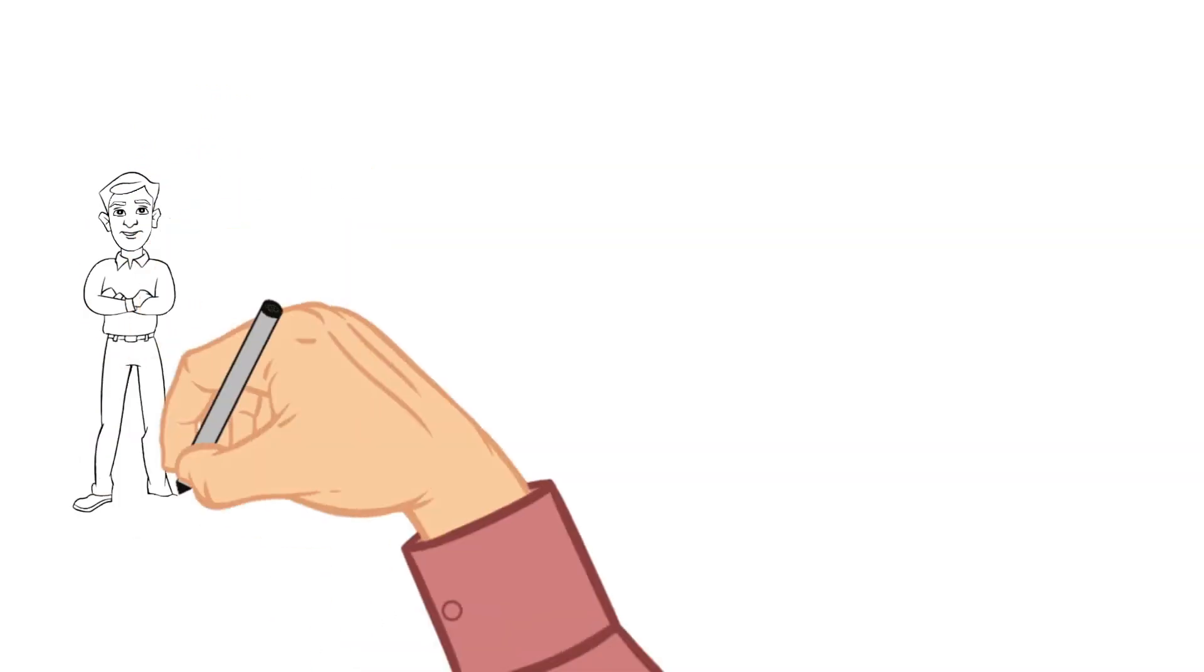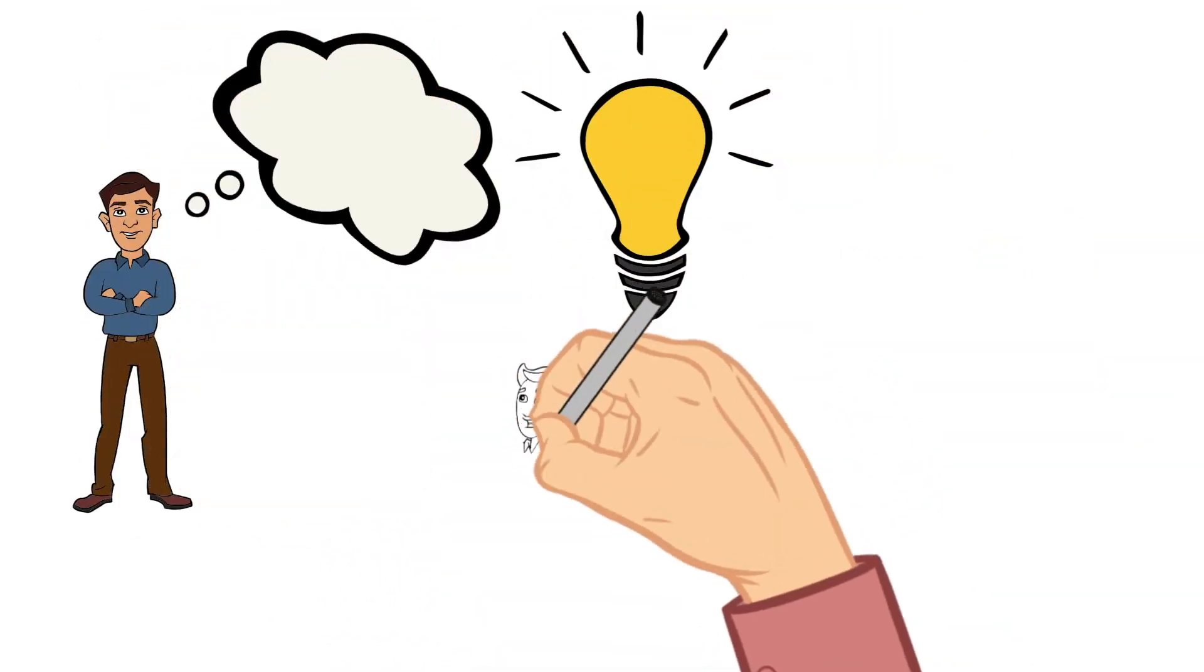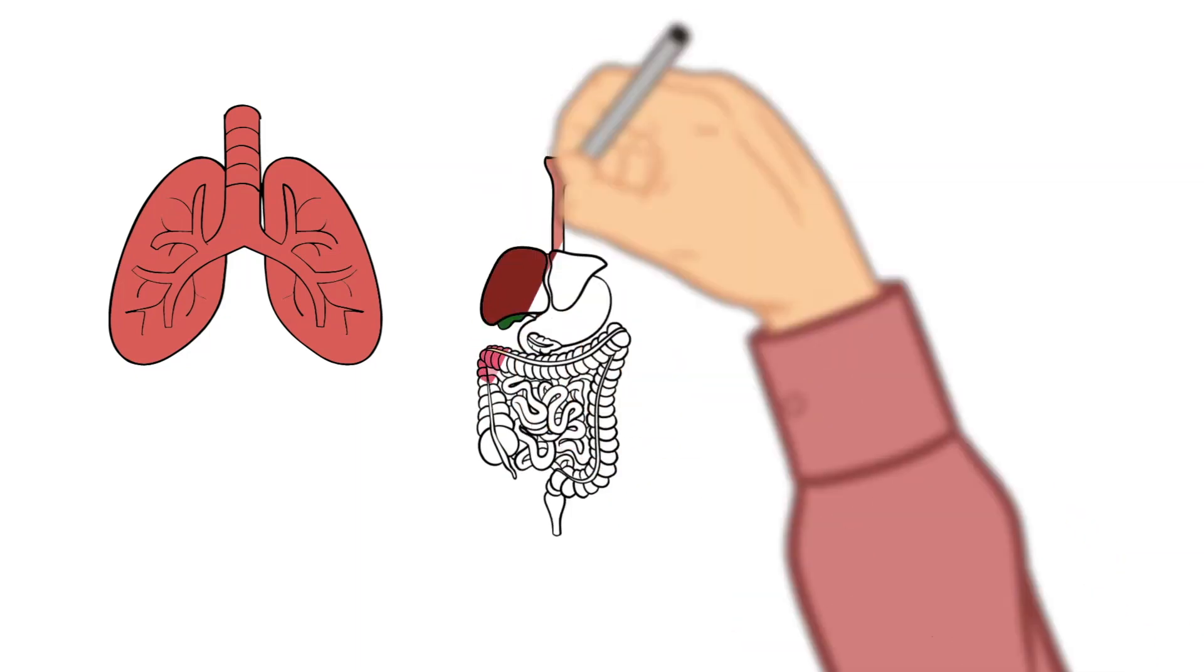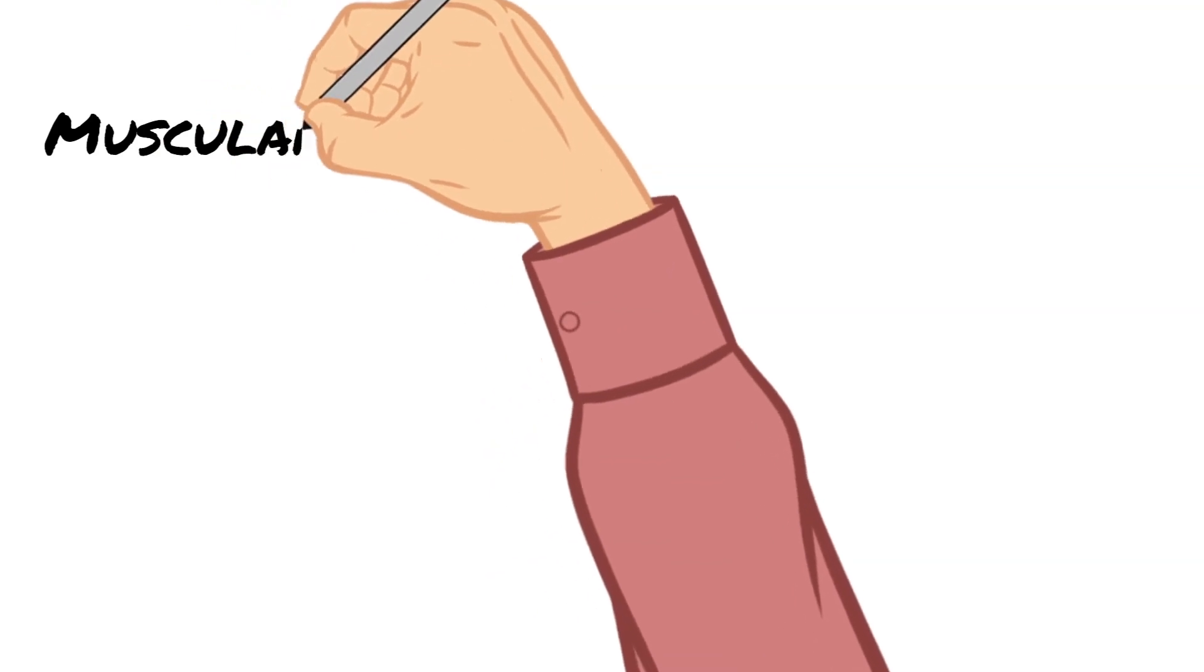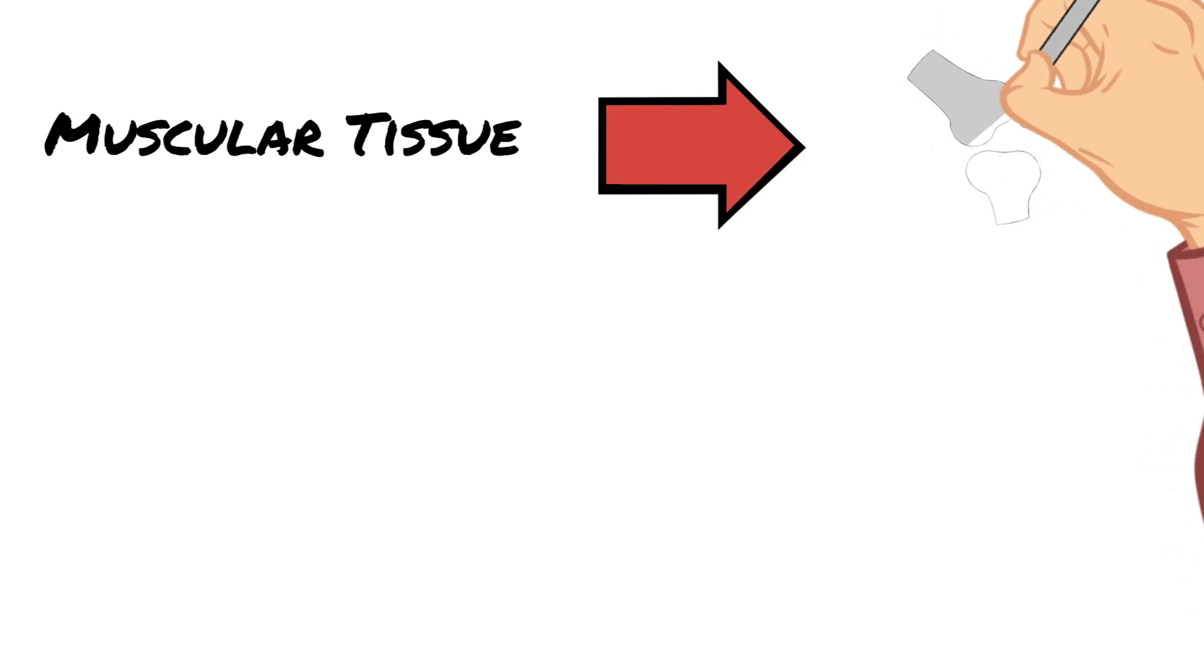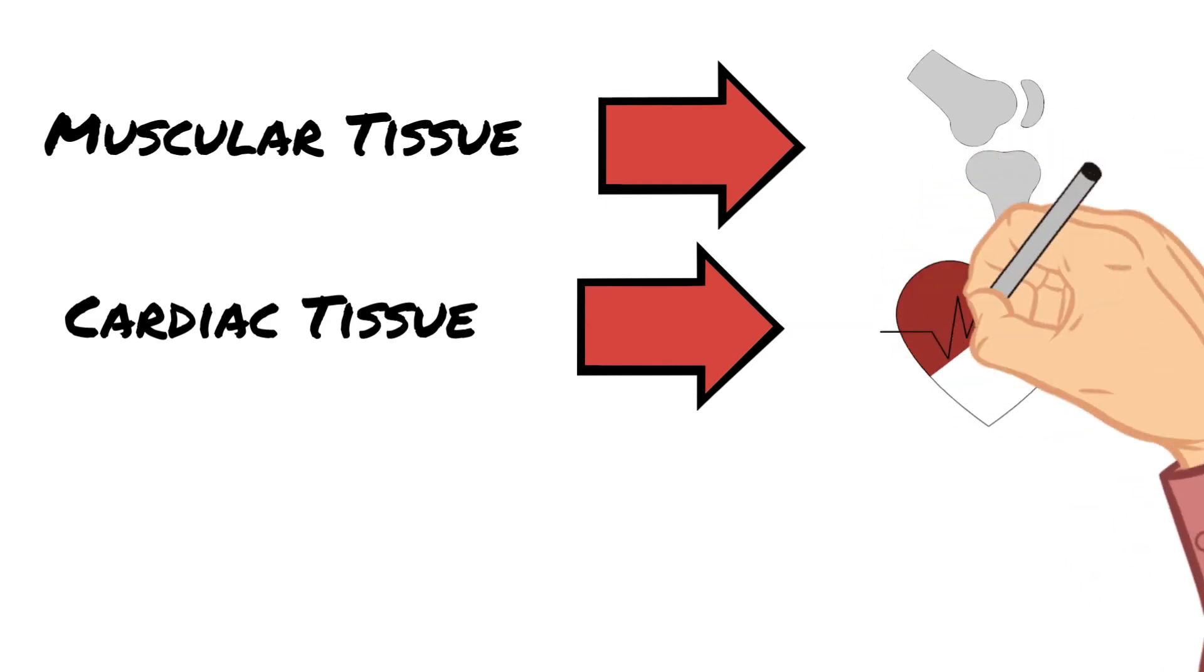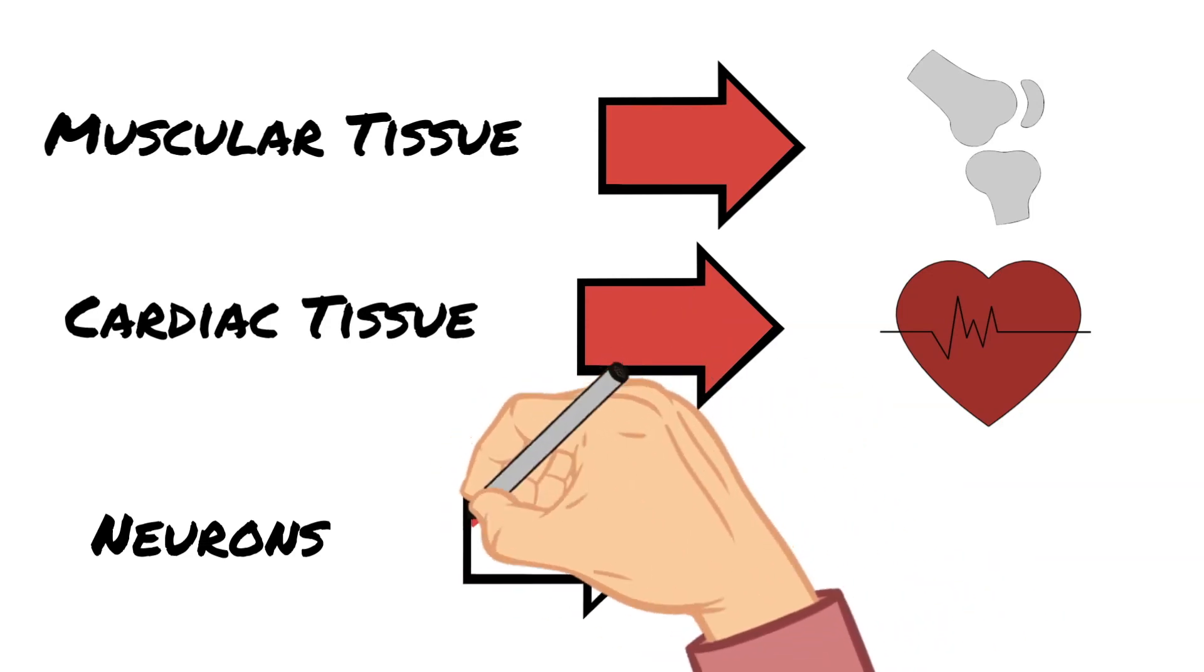These connections make up the way we think, learn, move, and feel. They control how our bodies work, regulating breathing, digestion, and the beating of our hearts. Now, don't be confused here: muscular tissue moves our bones and cardiac tissue makes our heart beat, but these neurons sending messages back and forth from the brain is what triggers those muscles to do so.